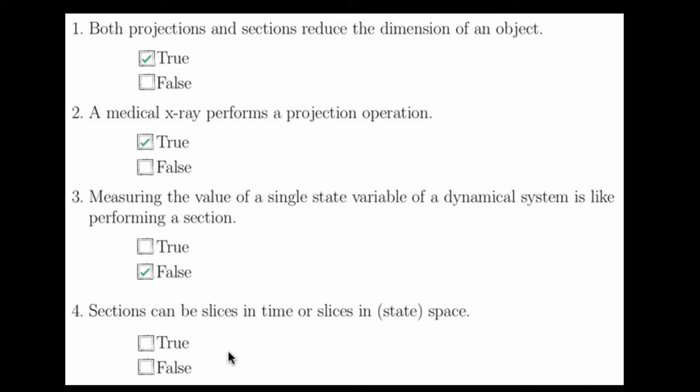Question 4 states that sections can be slices in time or slices in state space, and this is true. A section in time is called a temporal section, and this is like flashing a strobe light at a pendulum. Alternatively, you could slice in space. This would be like taking a plane and sticking it through one of the wings of the Lorenz butterfly, which would result in a Cantor set.